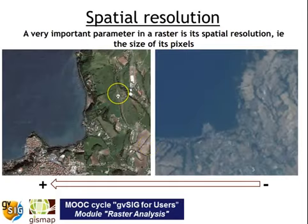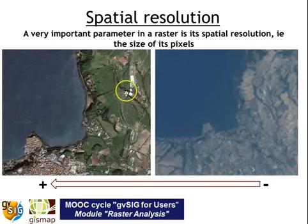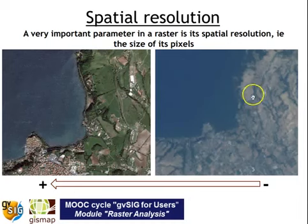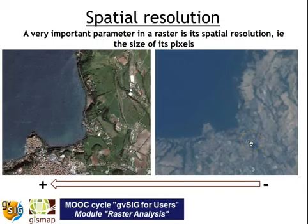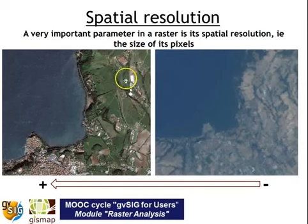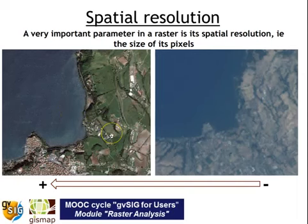Let's speak about spatial resolution. You can see two different images with different spatial resolutions, meaning they can be used for different purposes. With lower-resolution images, you can perform a land cover map at a scale of 1:100,000, for example, while with very high resolution such as Google Earth, you can perform highly detailed land cover maps or cadastral mapping.